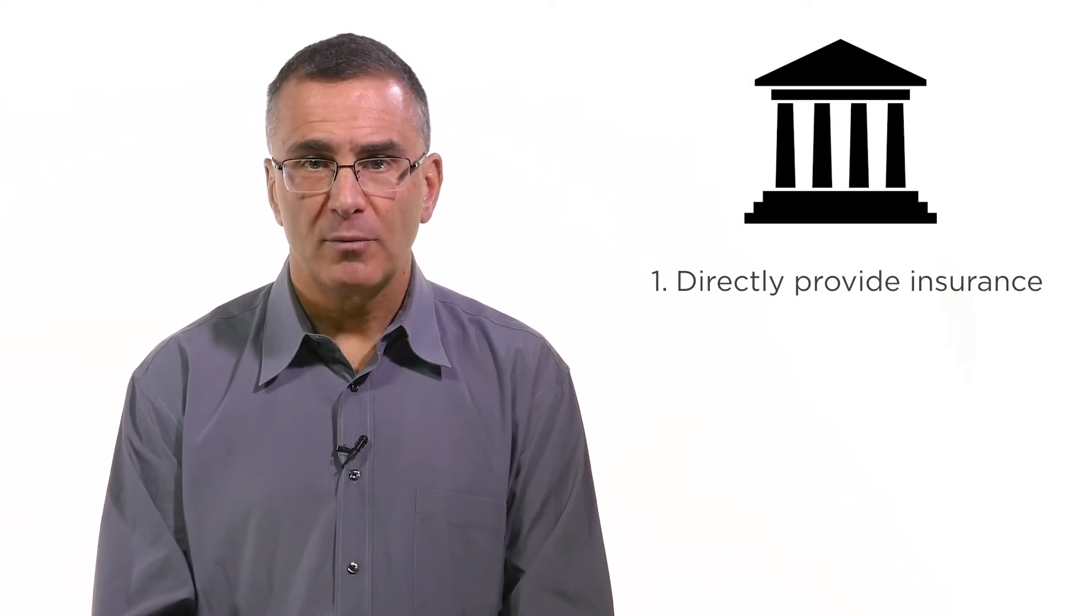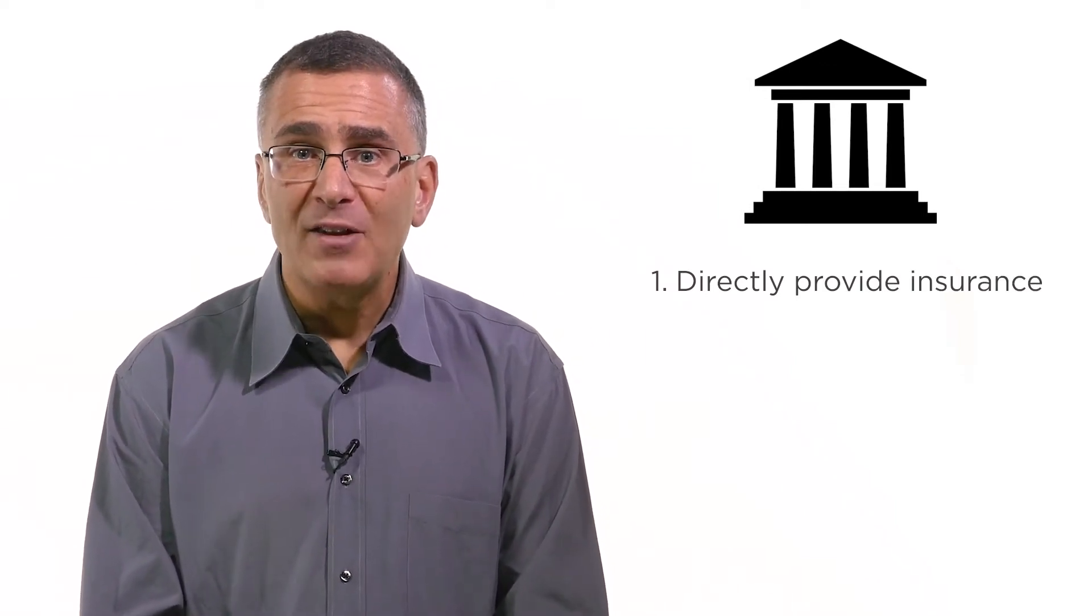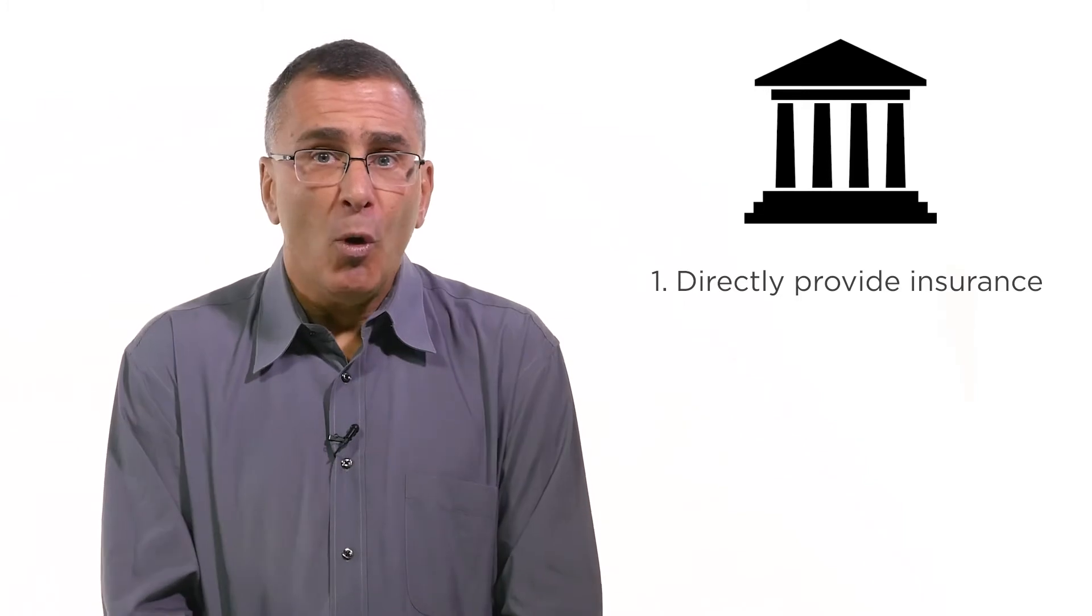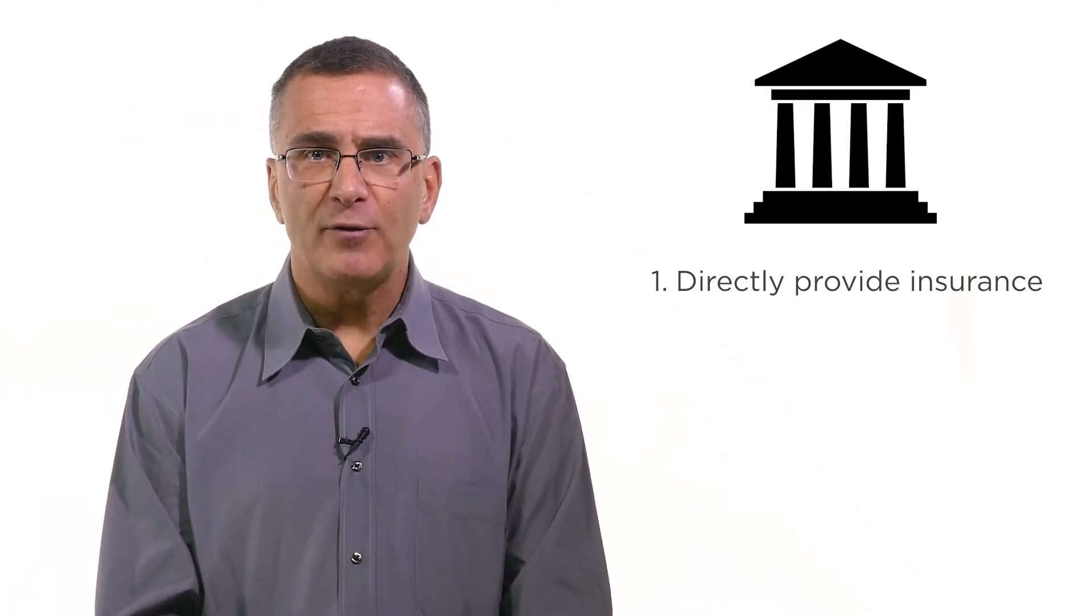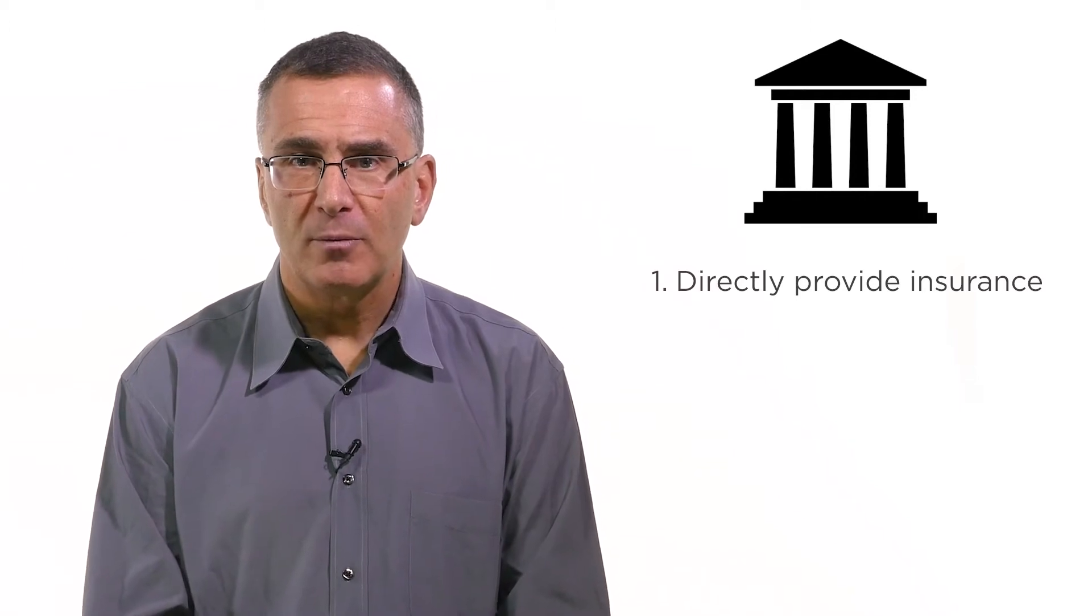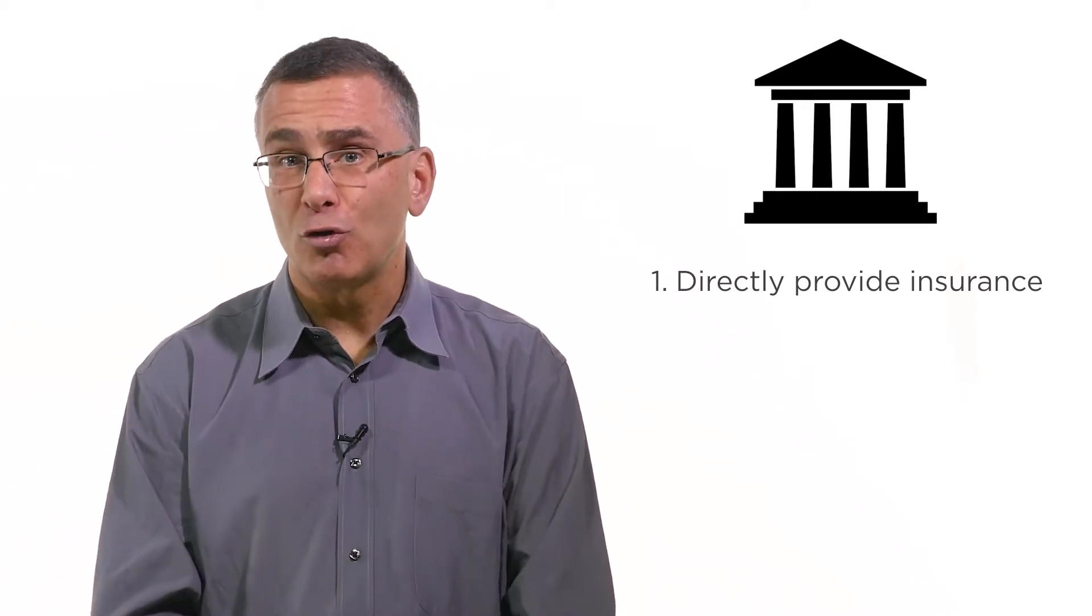The first option is to directly provide the insurance. If the government just provides the insurance for free, then there's no worry about a market failure since everybody gets it for free. Then you don't have only sick people getting insurance. This is the traditional social insurance model in the US.